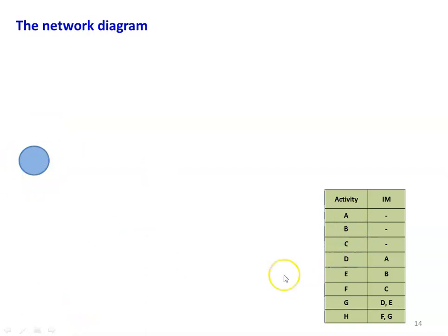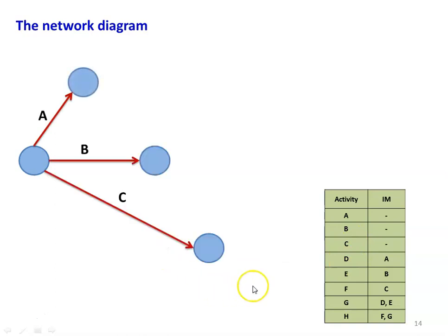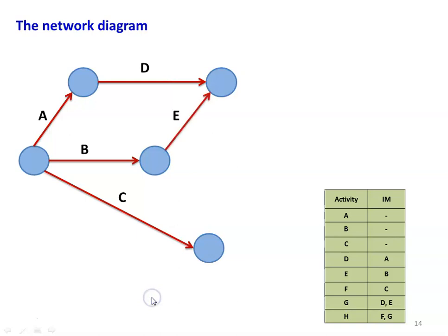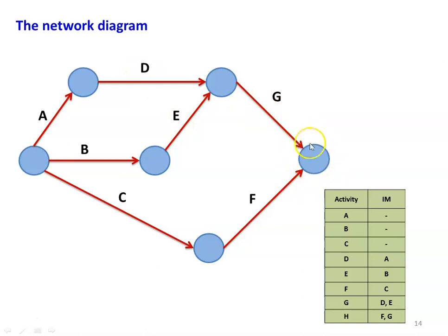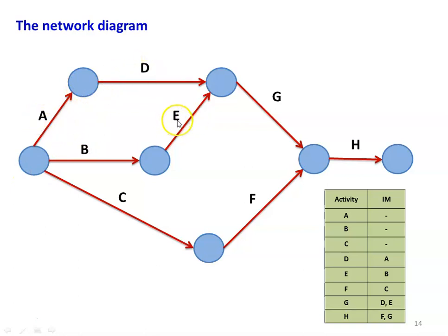Drawing the network for this example: activities A, B, C independently emerge from the initial event. D starts after A; E after B; F after C. G starts after completion of D and E, so D and E converge at one event before G begins. H starts after F and G, with F and G converging at a single event before H. This gives us the complete network diagram with one initial event and one final event.